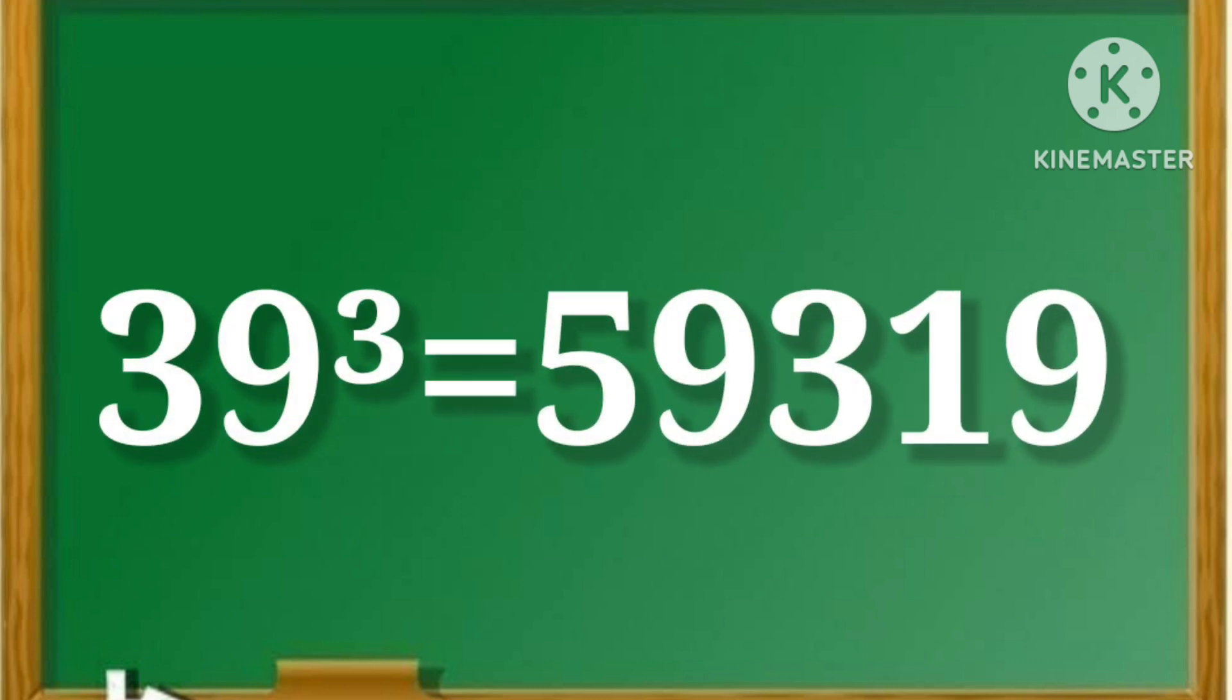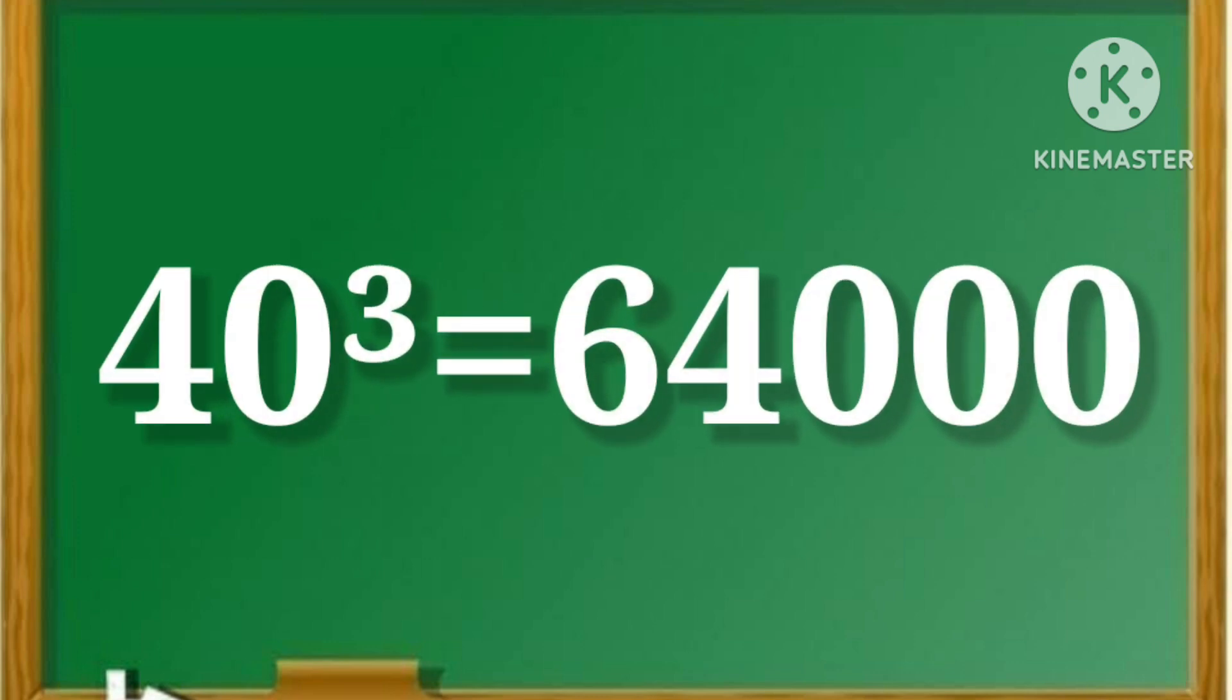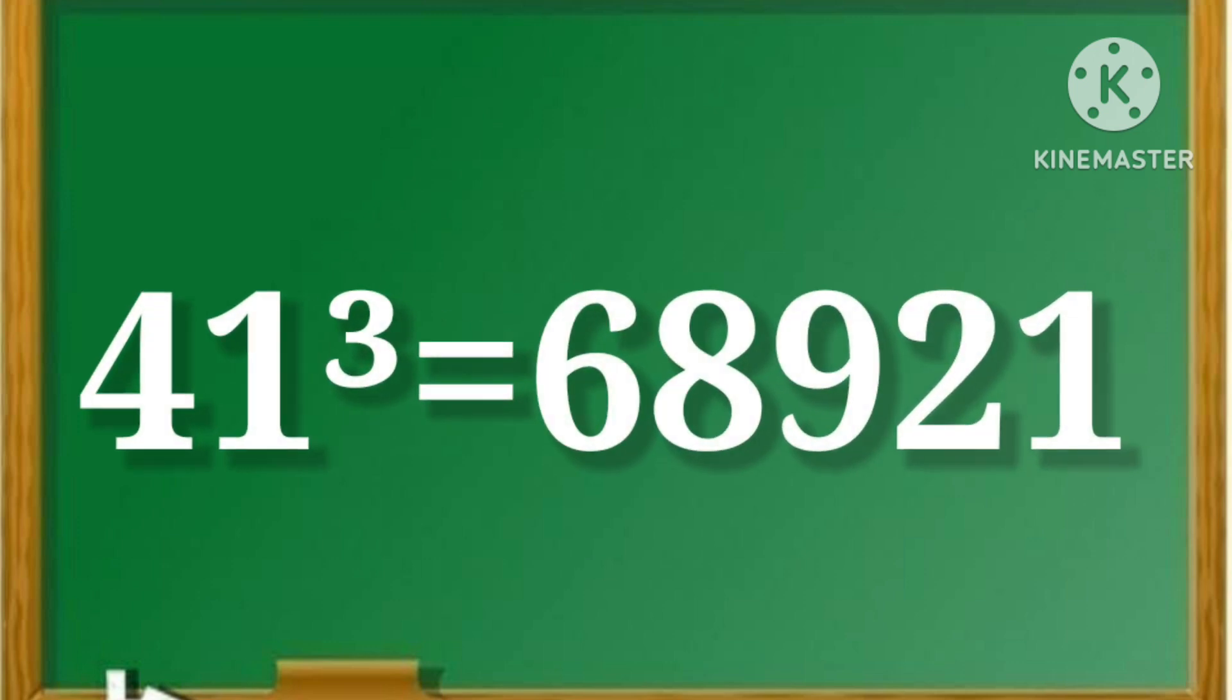39 cube is equal to 59,319. 40 cube is equal to 64,000. 41 cube is equal to 68,921.